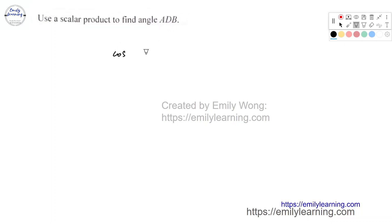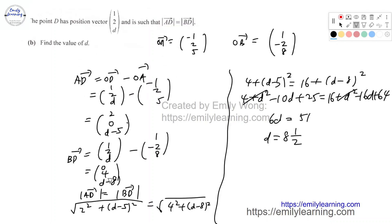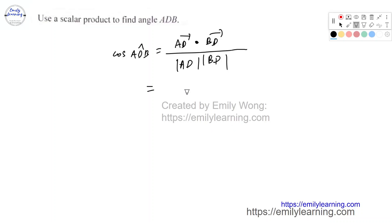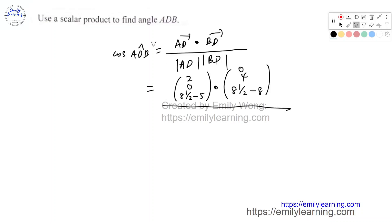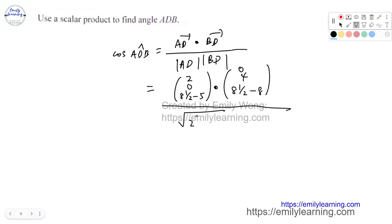Next, we use the scalar product to find angle ADB. cos(ADB) = AD · BD divided by |AD||BD|. We substitute d = 8.5 into our earlier expressions: AD = (2, 0, 3.5) and BD = (0, 4, 0.5). Since |AD| = |BD|, we only need to find one magnitude and square it. |AD|² = 2² + 0² + 3.5² = 4 + 12.25 = 16.25.